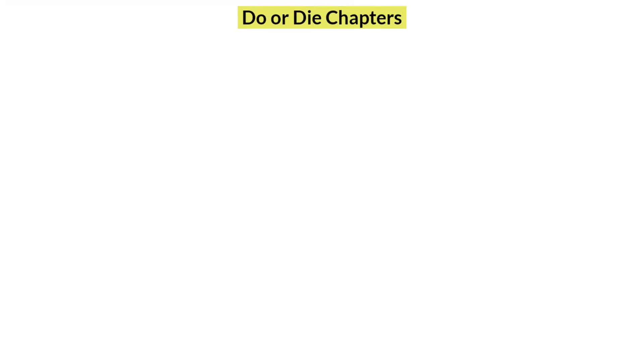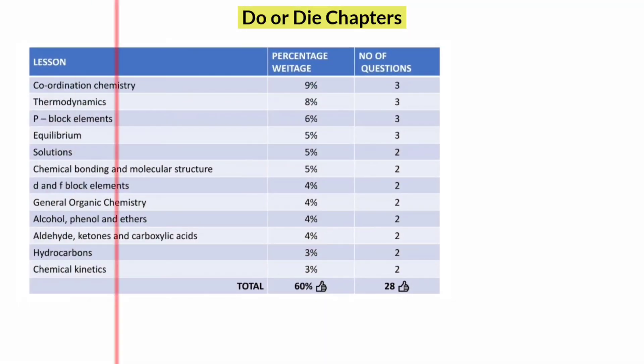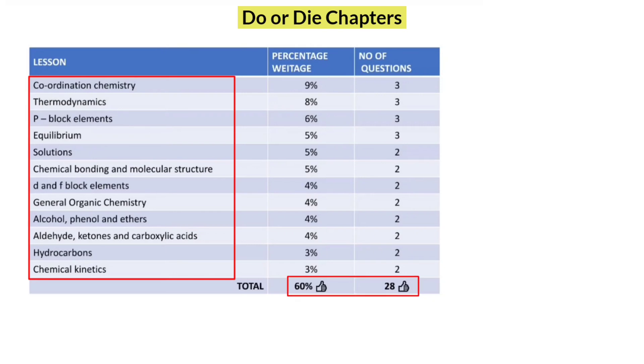There are totally 29 chapters in chemistry. In that, these 12 chapters are very important. You will get around 28 questions out of 45 questions only from these 12 chapters. So give more time and effort to master these chapters first. Once you are thorough with all these 12 chapters, you can comfortably score 110 to 120 marks easily.